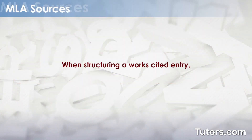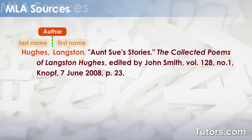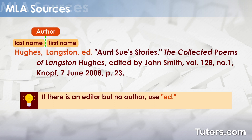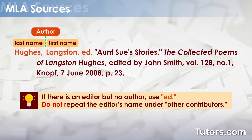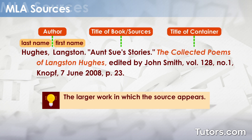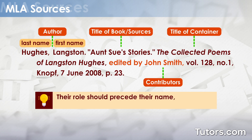When structuring a Works Cited entry, there are nine core elements to consider. Identify the author. If there is an editor but no author, place the editor's name in the author position followed by ED. Do not repeat the editor's name under Other Contributors. Enter the title exactly as it appears in the source. A container is the larger work in which the source appears — examples include newspapers, magazines, and websites. When an individual contributes to the work in some important way, add their name to the entry. Their role should precede their name, such as edited by or translated by.